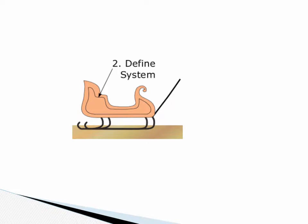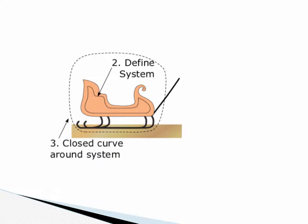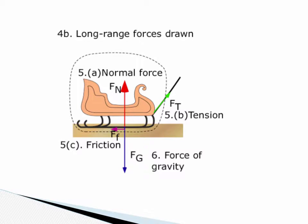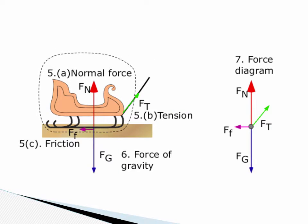The sled is being pulled. Define the system. Enclose it in a circle. Identify those forces: normal, friction, tension. And then obviously you have gravity as a field force. So the force diagram would look like that.